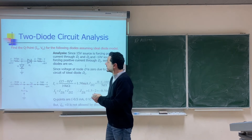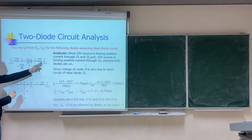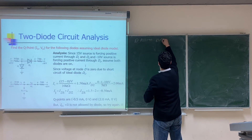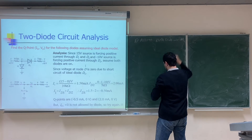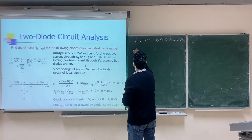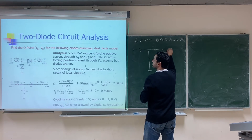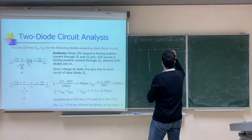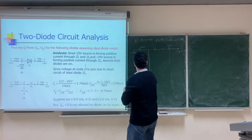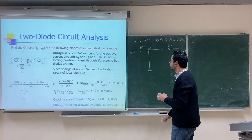First step — Assume. Looking at the circuit, the anode of both diodes is connected to a higher voltage and the cathode to a lower voltage, so it makes sense to assume both diodes are on. With the ideal diode model, both are replaced by short circuits. Diode D1 short circuit connects that node to ground (0V), and D2 is also a short circuit.